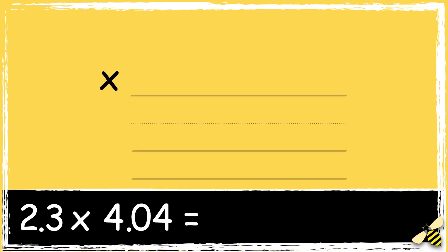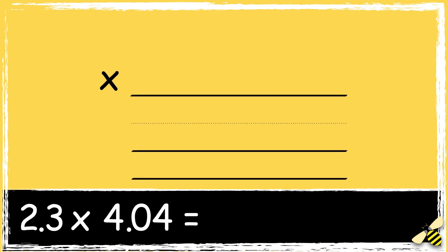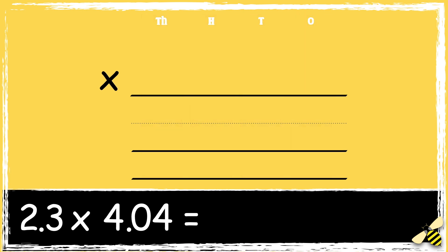Here's another example: 2.3 multiplied by 4.04. Remember, we need to line the numbers up correctly. Initially, we ignore the decimal point and treat it as if it was a whole number. So 23 multiplied by 404.